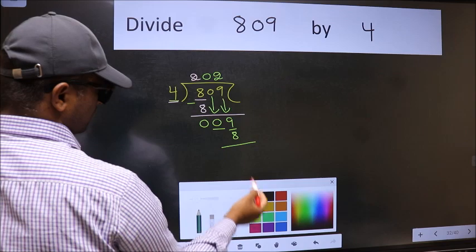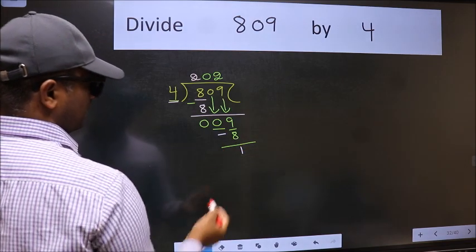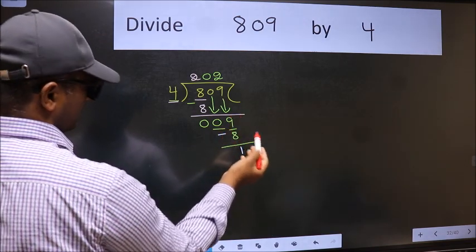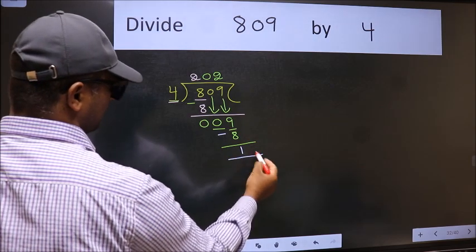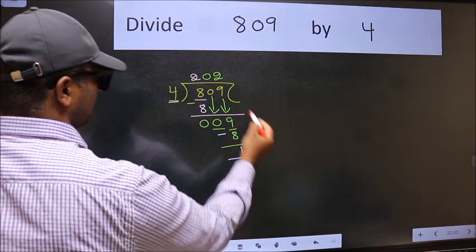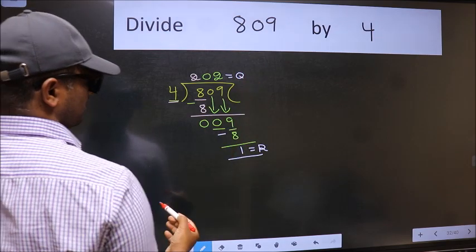Now, we should subtract. We get 1. No more numbers to bring it down. So, we stop here. This is our remainder and this is our quotient.